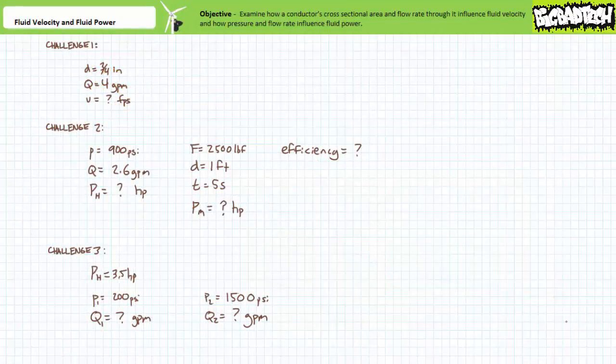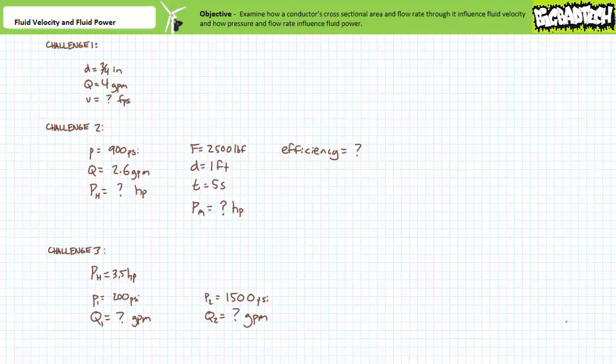For those interested in testing their understanding, here are three challenge problems. Challenge 1: given a conductor with a 3/4-inch internal diameter carrying 4 gallons per minute, determine fluid velocity in feet per second. Challenge 2: given a hydraulic system supplying 900 psi and 2.6 GPM to an actuator that lifts a 2,500-pound weight one foot over five seconds, determine hydraulic power input in horsepower, mechanical power output, and actuator efficiency. Challenge 3: given a constant 3.5-horsepower output, determine flow at 200 psi and again at 1,500 psi.